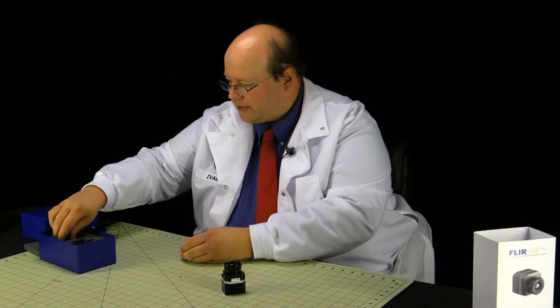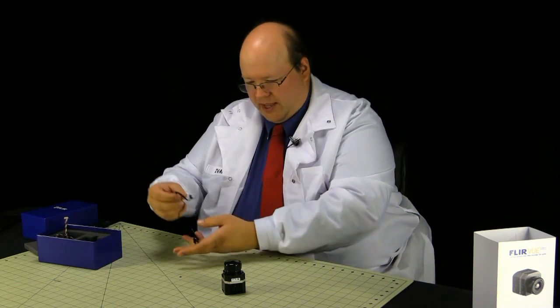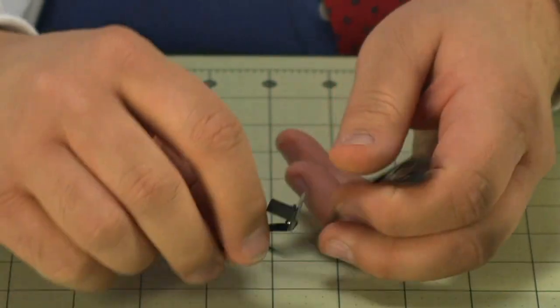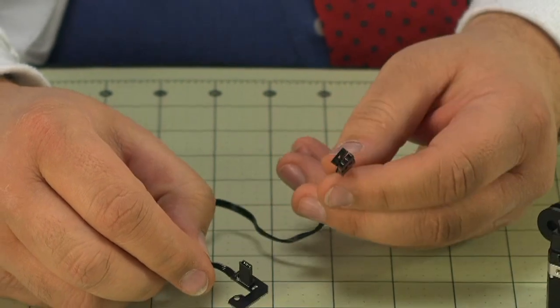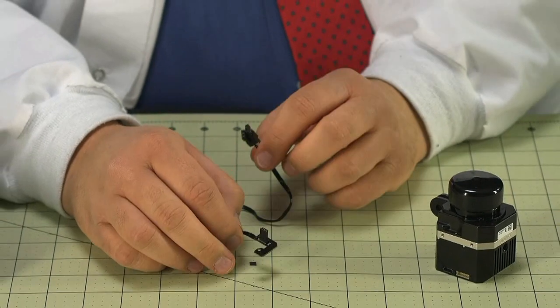Now one thing you might need which isn't included with the camera is a cable that allows you to output your video and power the camera in flight. This is actually stolen from a Tarot gimbal. Any GoPro 3 and 4 cable will work perfectly for that.